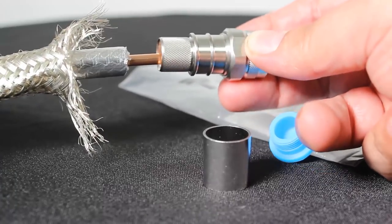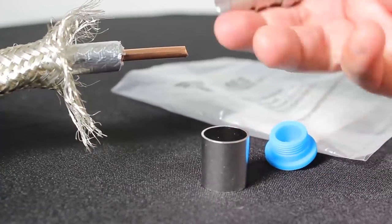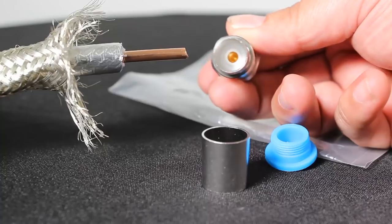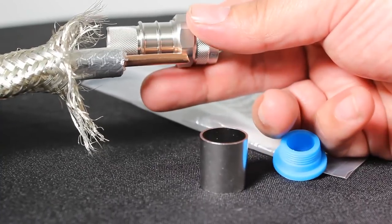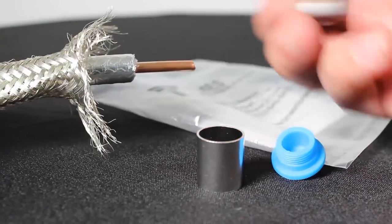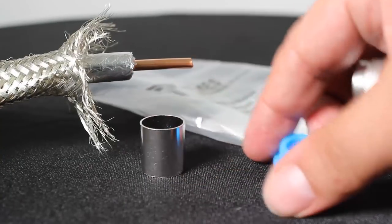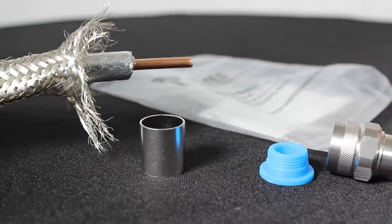So let's take a look at the inside there. That would go on like that, the braid over, and the sleeve of course would need to get crimped on.